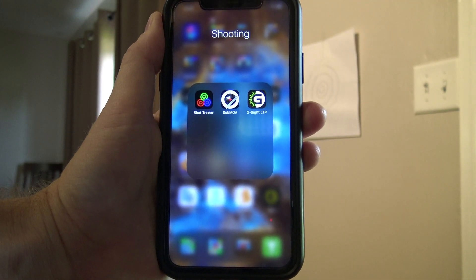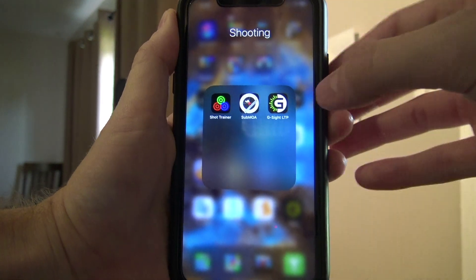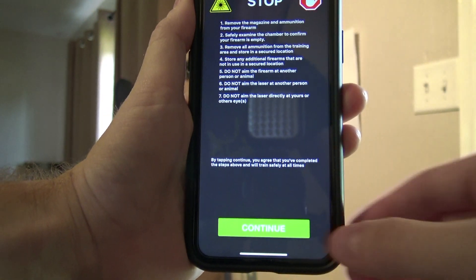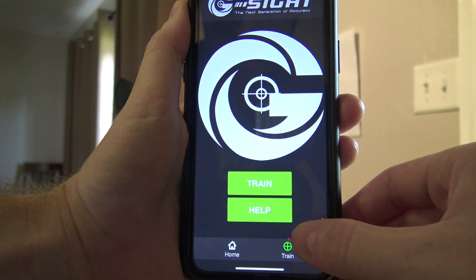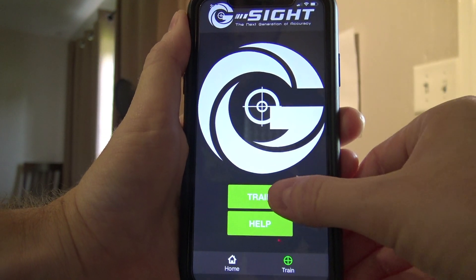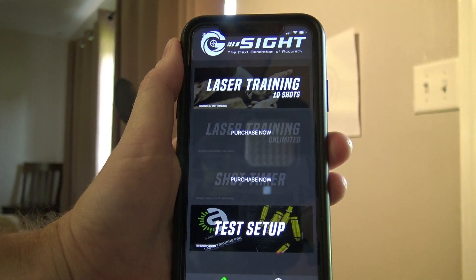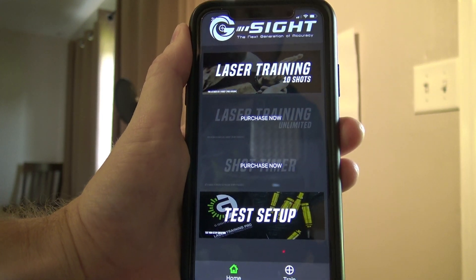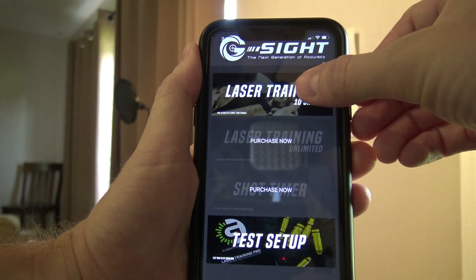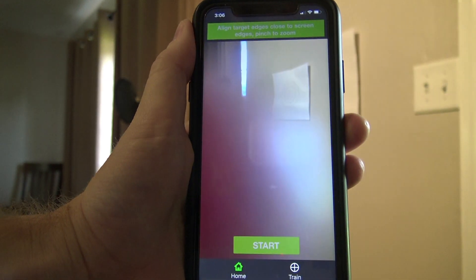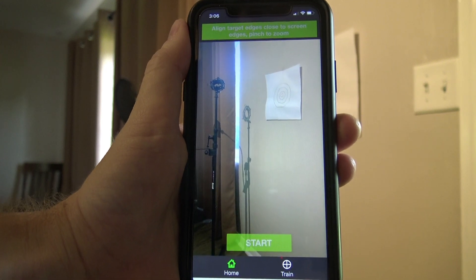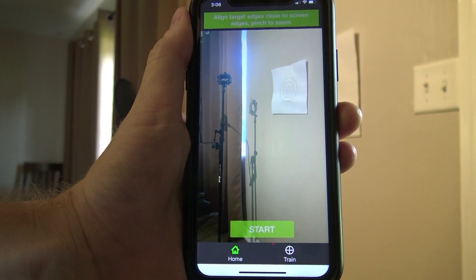We'll start by launching the G-Sight application, available in the App Store for both iOS and Android. After continuing through the safety reminders, click Train. There are options to unlock other training methods, but I'll use the generic laser training 10-shot method. It'll ask you to set up your camera in front of the target.